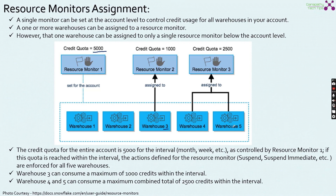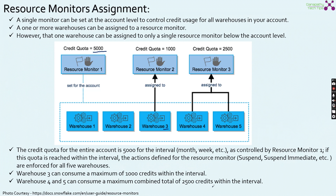Resource monitor 3 is assigned to both Warehouse 4 and Warehouse 5 with a credit quota of 2500 — meaning if the total consumption of Warehouse 4 and 5 reaches the 2500 limit, we can take the notification action. The credit quota for the entire account is 5000 for the interval as controlled by resource monitor 1. If the quota is reached, the defined actions — suspend, suspend immediate, or notify — will be enforced for all five warehouses. Warehouse 3 can consume a maximum of 1000 credits; Warehouse 4 and 5 can consume a maximum combined total of 2500 credits within the interval.